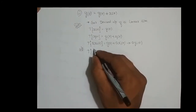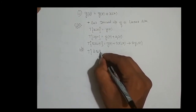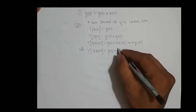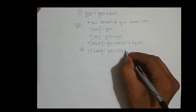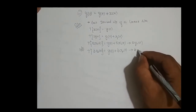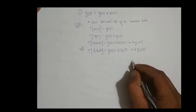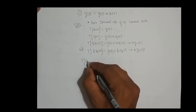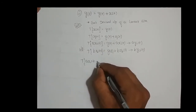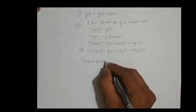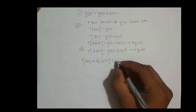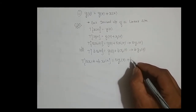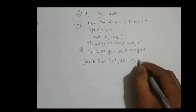Similarly, what is the transformation of b times x2 of t? This is nothing but g of t plus b times x2 of t, which is nothing but b times y2 of t. Now I will combine these two: a times x1 of t plus b times x2 of t should result in a times y1 of t plus b times y2 of t.